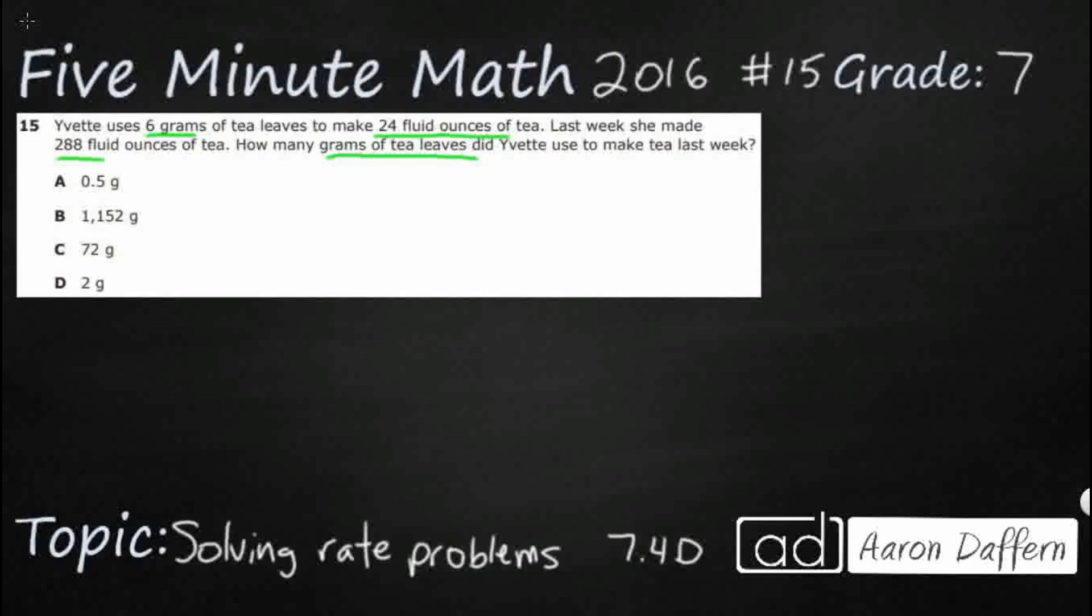First, if we want to, we can try to find the constant of proportionality. So let's take a look at our basic equation. Y equals KX. So X is going to be our independent variable, and that's what we're going to start with.